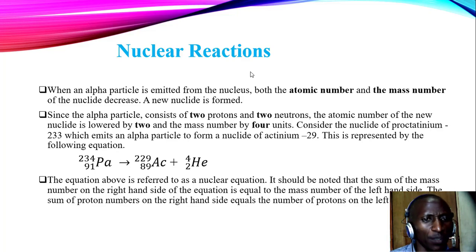We said that when a particle is emitted from the nucleus both the atomic number and the mass number of the nuclei decreases and that is why we see a new nuclei is formed. Viewers remember we mentioned what is a nuclei. This is an atom whose composition of the nucleus can be shown in terms of how many protons are there, how many neutrons are there and that is shown as the atomic mass and atomic number.